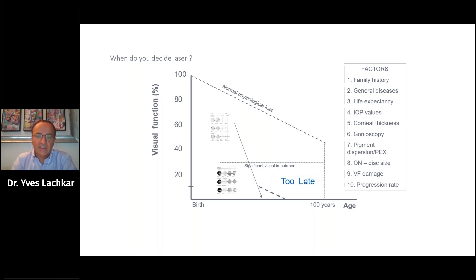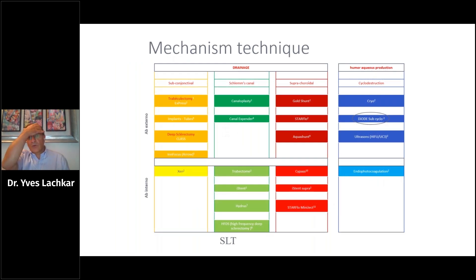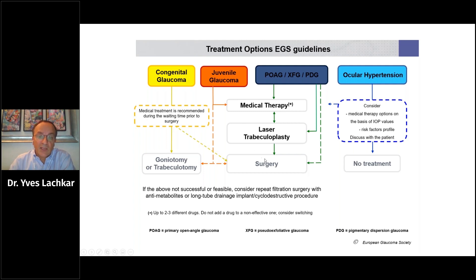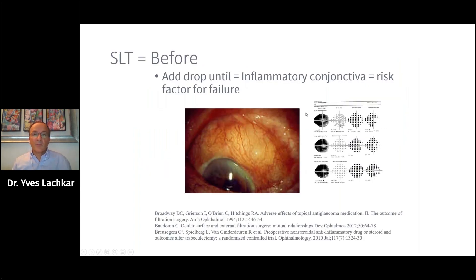The main problem is not arriving too late. As we know, there are many mechanisms and techniques. When treating patients with primary open-angle glaucoma, we used to start with medical therapy, then laser, then surgery. But now we have another line — we can choose laser first. Before, we would add drops, add drops, add drops, until an inflamed conjunctiva with a very high risk of surgical failure.